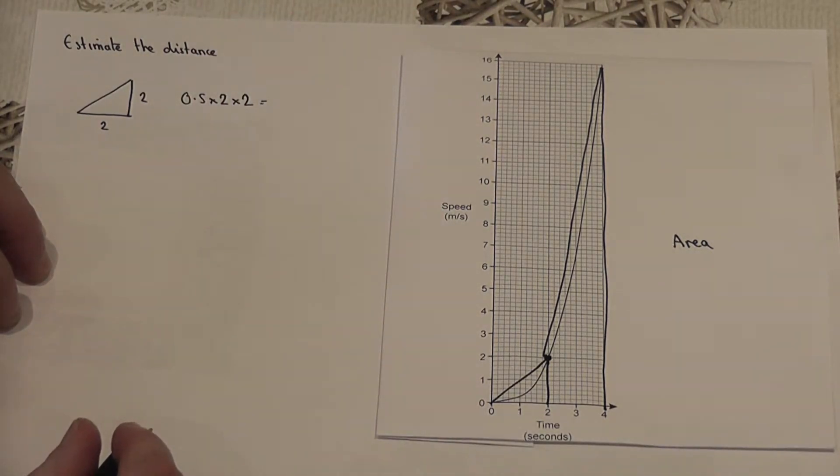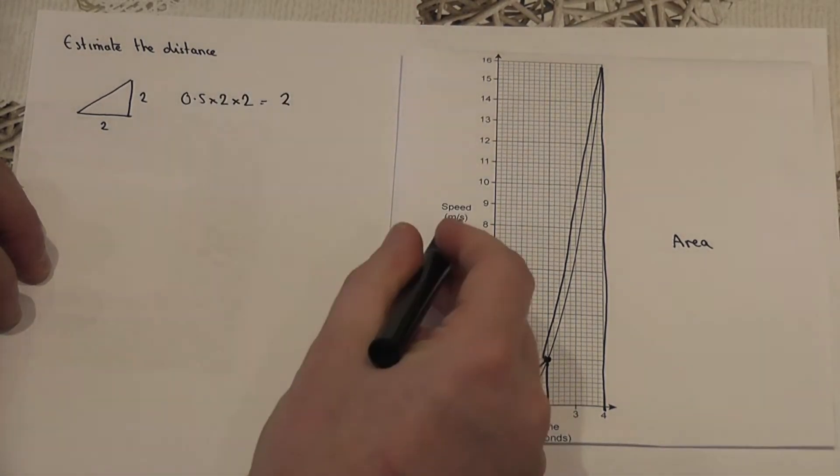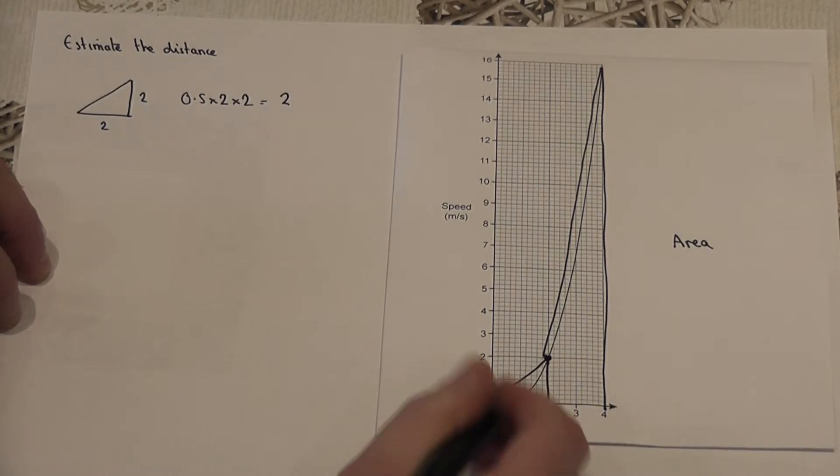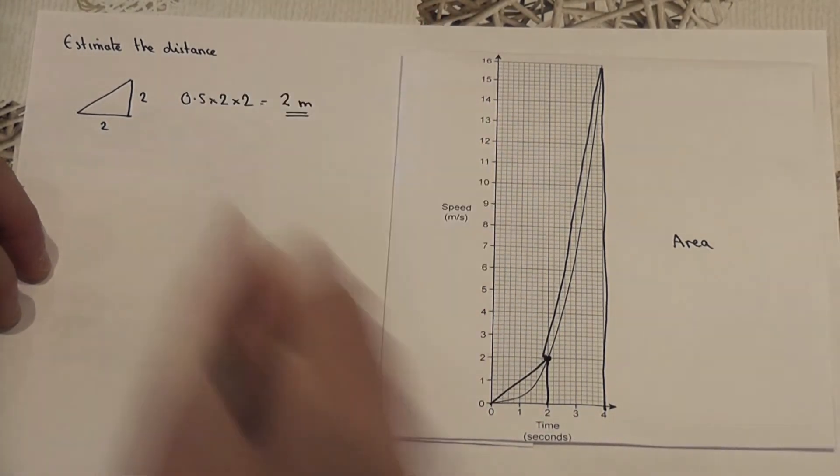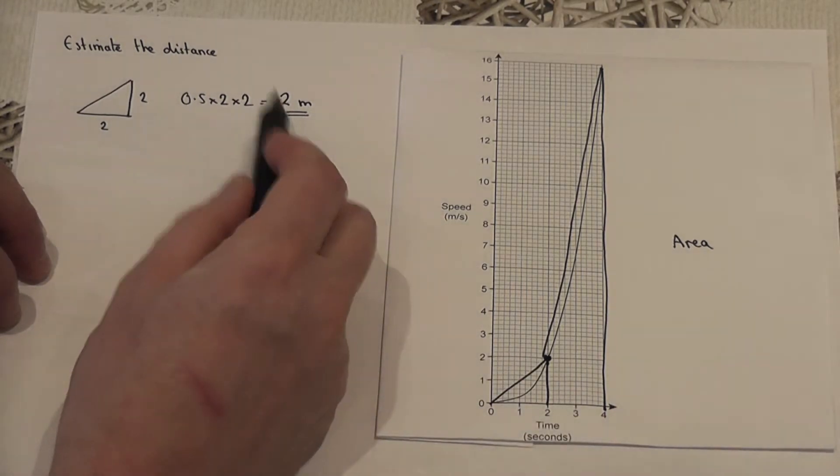Well, 2 times 2 is 4. Half of 4 is 2, so it's 2 metres. So the area under that triangle is 2 metres. In the first 2 seconds, approximately 2 metres were travelled.